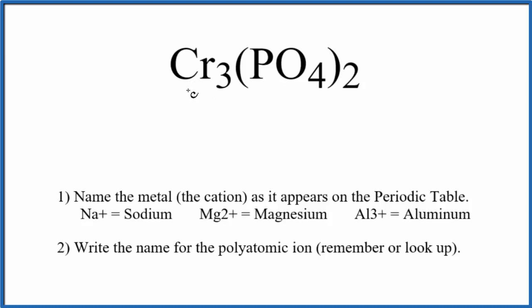Chromium is a transition metal, so we have this metal and then these nonmetals in the polyatomic ion. We're going to use these rules here to write the name for Cr3(PO4)2.